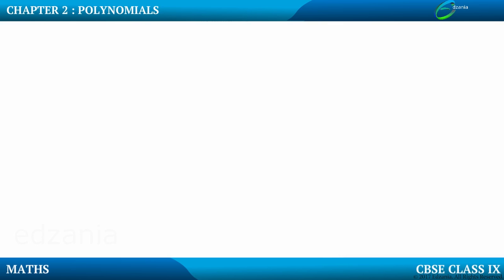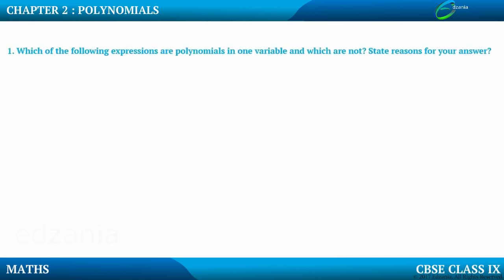Let us move on to a few questions based on the topics we have covered so far. Here is Exercise 2.1 NCERT. The question is: which of the following expressions are polynomials in one variable and which are not? State the reason for your answer. We are supposed to identify which expressions are polynomials in one variable and give reasons.